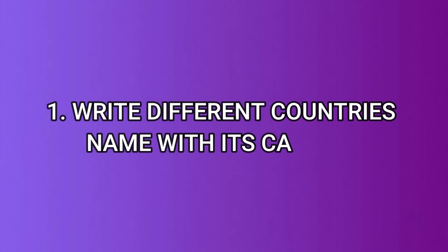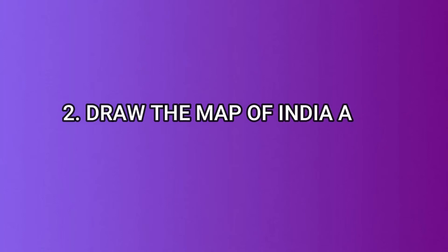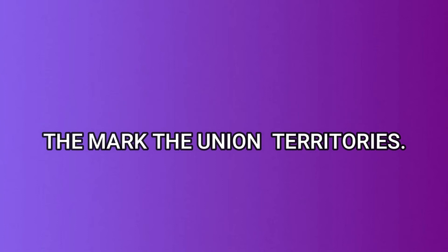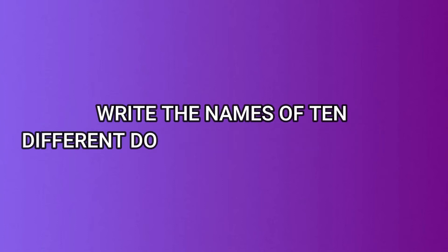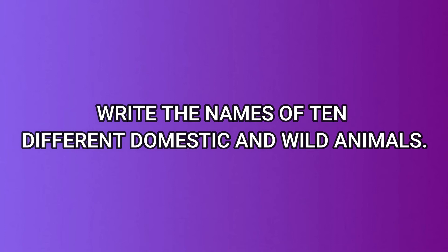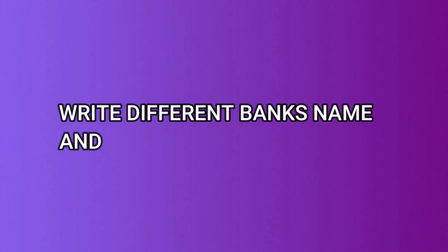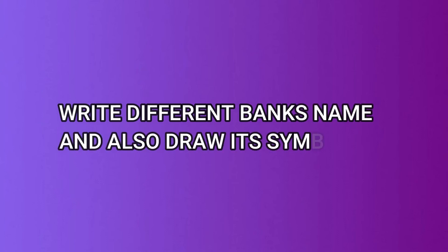Number one: write different countries' names with their capitals. Number two: draw the map of India and mark the Union territories. Number three: write the names of different domestic animals and wild animals.